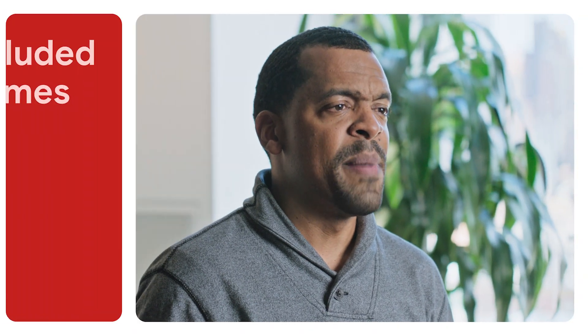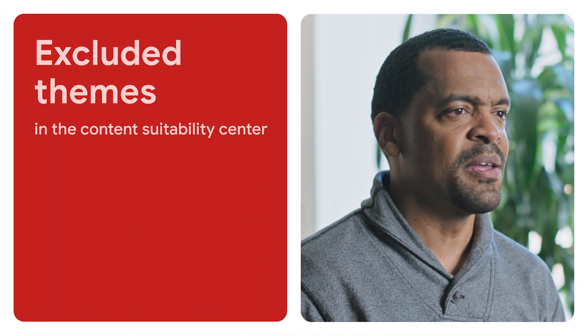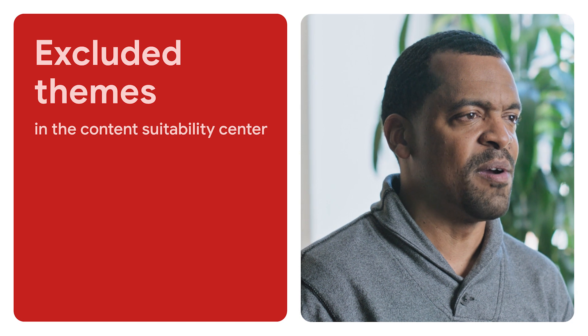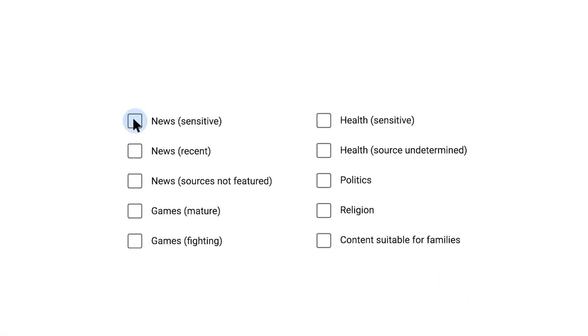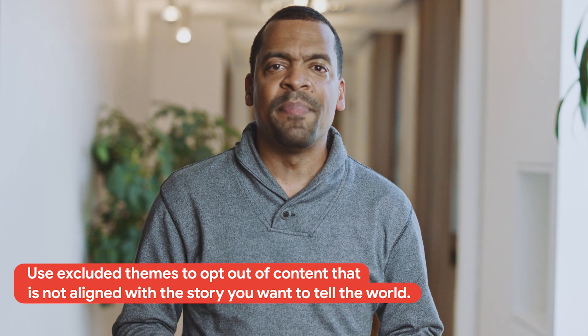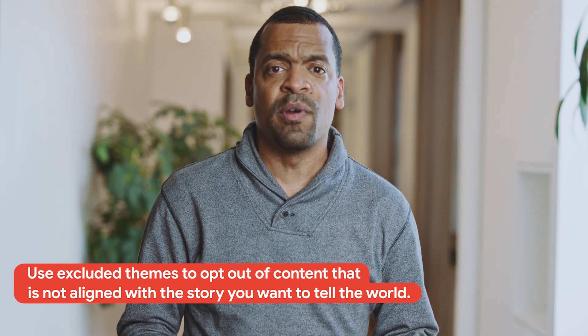Now, we've gone one step deeper and have launched Excluded Themes in the Content Suitability Center. Excluded Themes are a powerful new tool to further refine and control the type of content your ads appear adjacent to. They are designed so that you can have more nuance and clarity when opting out of certain content. There are 10 content themes you can choose to exclude — from content suitable for families, including made-for-kids content, to politics or nuanced gaming themes. Use Excluded Themes to opt out of content that is not aligned with the story you want to tell the world. You can add these exclusions in just two clicks and have it apply across your account.